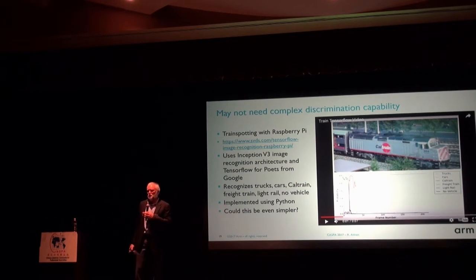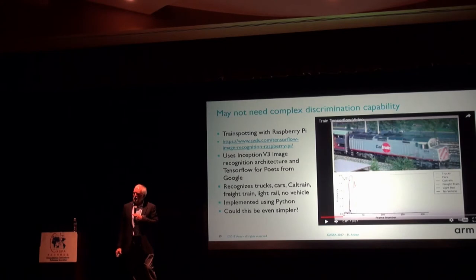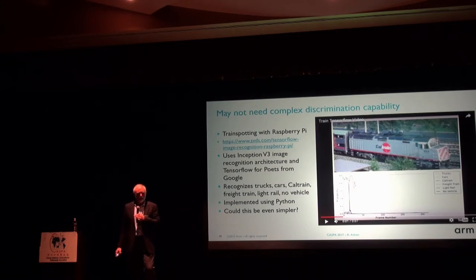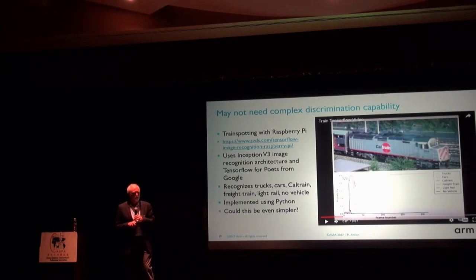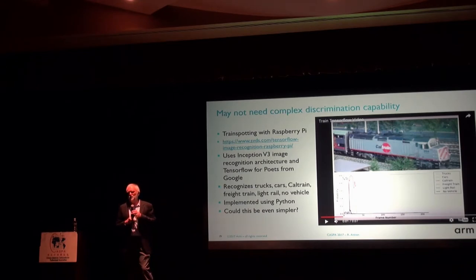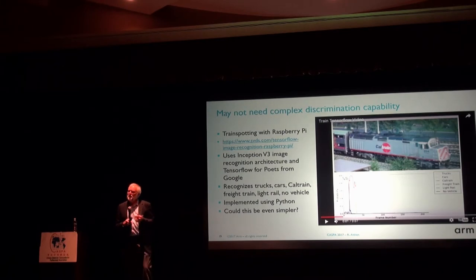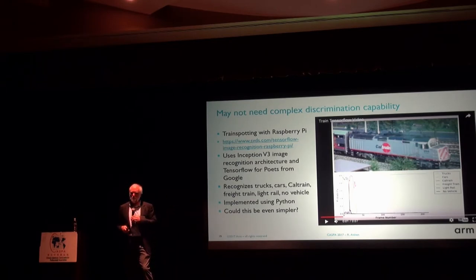Here's an example of work done locally by a guy named Matt Rubashkin. He was interested in the problem of how do you spot a Caltrain — the schedules Caltrain posts and the actual reality of trains arriving don't necessarily have much to do with each other. By building a simple trainspotting network using TensorFlow for Poets — which adapts TensorFlow, and you can go to this page yourself — he used Inception V3 and trained the last layer to recognize the difference between a Caltrain, a freight train, a light rail, trucks, and nothing. With that simple training, his network is now able to recognize the train connected to a video camera.